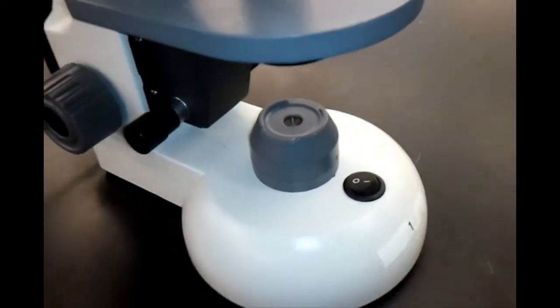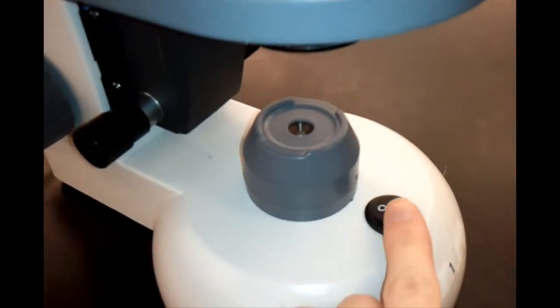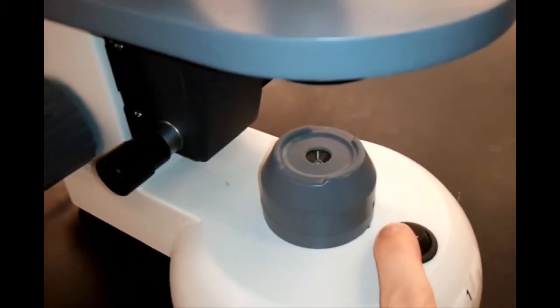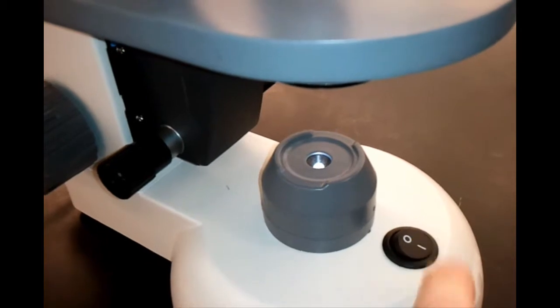In order to see an image through the microscope, a light source is needed. Some microscopes use a mirror to collect light, but this microscope has a light box that can be turned on and off.